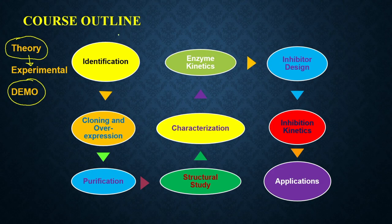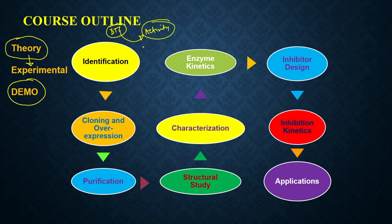The course is outlined so that you will start from very basic information — for example, if you have identified an activity that degrades an environmental hazard like DDT, you only know about this activity and not what the source is. So how can you identify the enzyme? That will be the first aspect we discuss. Apart from that, sometimes you may have a DNA fragment that could potentially be responsible for coding a particular enzyme, and that can also be discussed during identification.